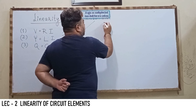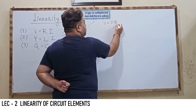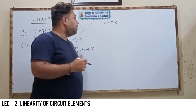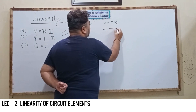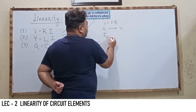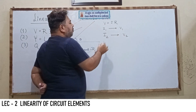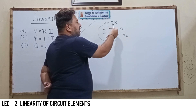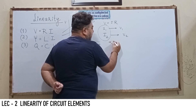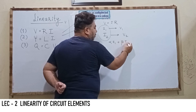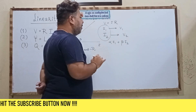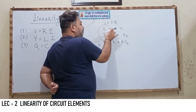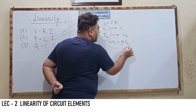To algebraically prove that the resistor is linear, using Ohm's law v equals i times R: every system has certain excitation and on the basis of that excitation it gives a certain response. Let's say current i1 gives response voltage v1, and current i2 gives response voltage v2. Now we make a linear combination of i1 and i2 — that is, alpha i1 plus beta i2 — where alpha and beta are constants.